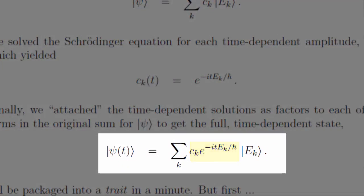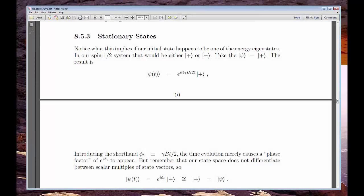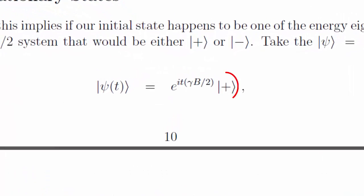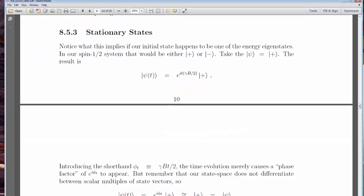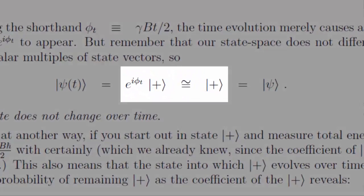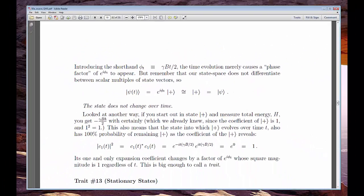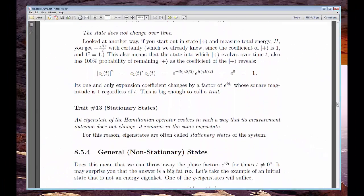Let's pause for a second and notice what happens if the state whose evolution we're trying to compute happens to be one of the energy eigencats. The time evolution doesn't seem to change anything, since vectors that differ by a mere scalar, especially a length 1 scalar, are considered identical states. Because of this, energy eigencats are often called stationary states. They don't change. They're stationary.